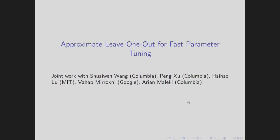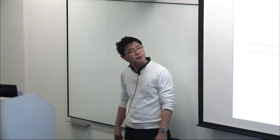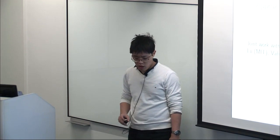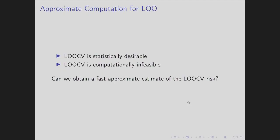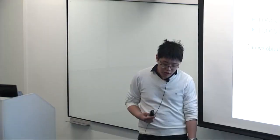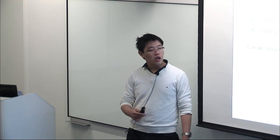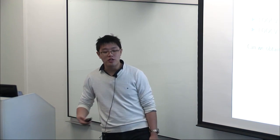The next part presents work done with colleagues at Columbia, now published in ICML 2018. We've seen that leave-one-out cross-validation is statistically desirable in high-dimensional settings, but having to fit your model n times—where n is potentially large—is computationally intractable. The question is: can we obtain a fast approximation of the leave-one-out risk without this computational cost? In the linear smoother case—where the predicted y-hat is a linear function of y conditional on X—there is actually a closed-form expression for the leave-one-out estimate.